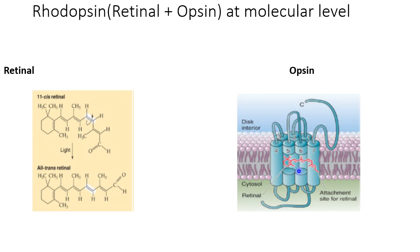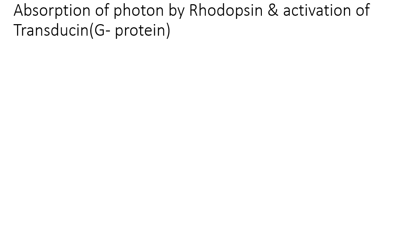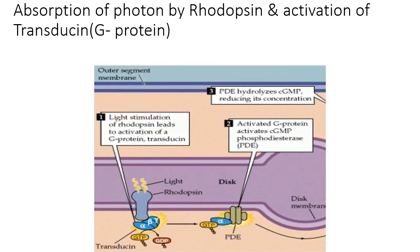This conformational change leads to the formation of metarhodopsin 2 from rhodopsin, which can activate an attached molecule called transducin. Transducin is a G protein and acts as the second messenger for this process. It is called transducin because it is the main machinery for signal transduction — it converts a light signal into a chemical signal.